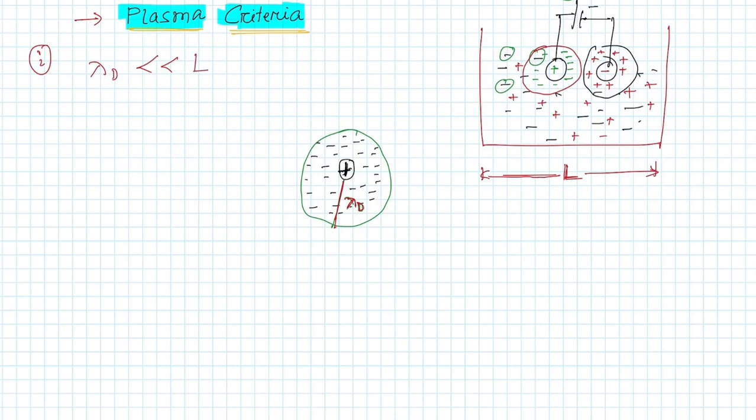Lambda_D must be very very less than the dimension of the system. The Debye length is the range up to which the external charge has influence.